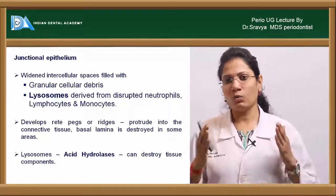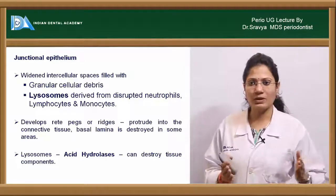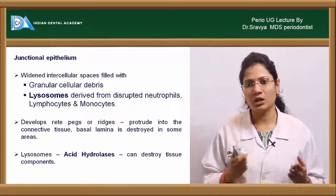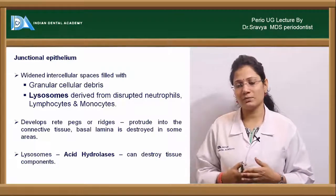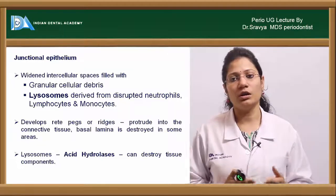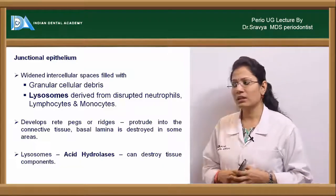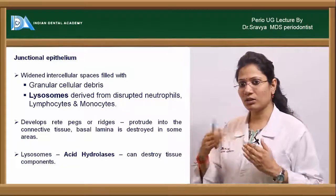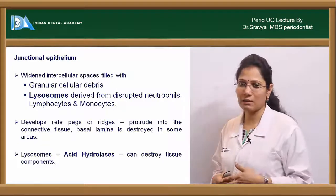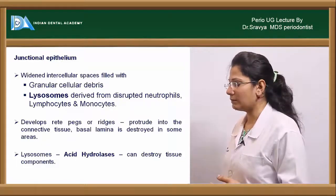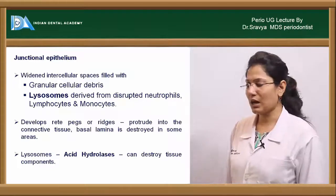The changes in the junctional epithelium at established gingivitis include widened intercellular spaces filled with collected fluid, neutrophils, lysosomal enzymes, lymphocytes, macrophages, and other inflammatory cells. There is development of rete pegs within the junctional and sulcular epithelium, destruction of the basal lamina and connective tissue, and acid hydrolases released from lysosomes play a key role in causing this destruction.